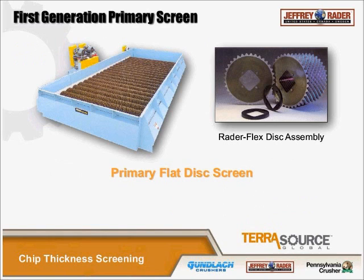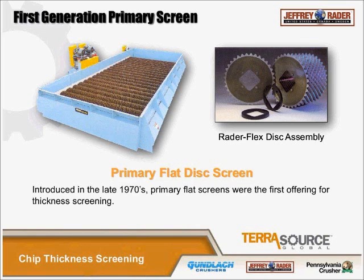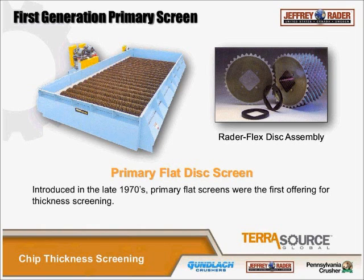The first generation of thickness screens are the primary flat screens, introduced by Rader in the late 1970s. These flat screens have an 8mm to 7.5mm IFO — interface opening — between opposing discs. While the original screens used spacers and discs similar to scalping screens, we then developed the RaderFlex design, giving more adaptability. Those RaderFlex disc assemblies are 12-inch modules slid onto a square tube, which made handling considerably better.